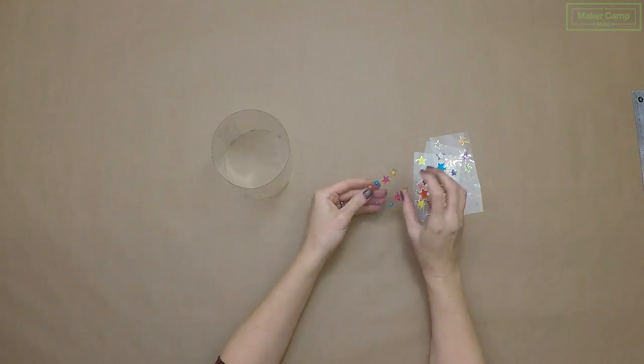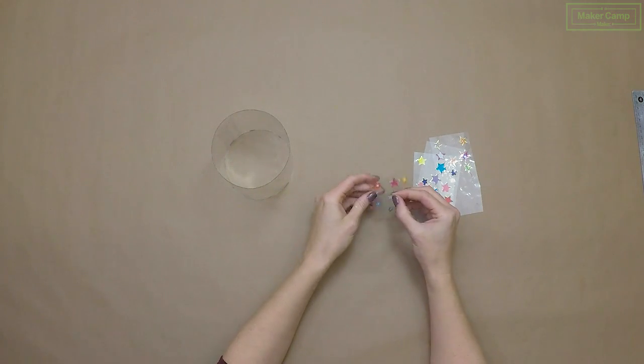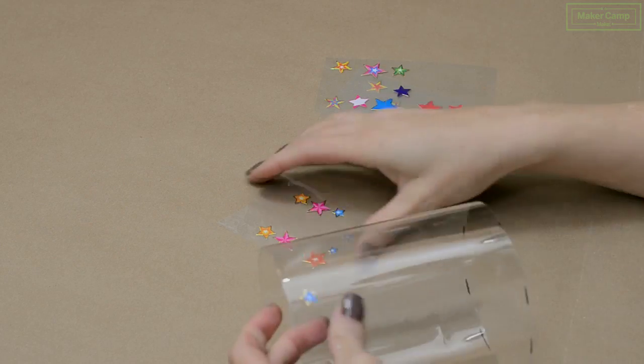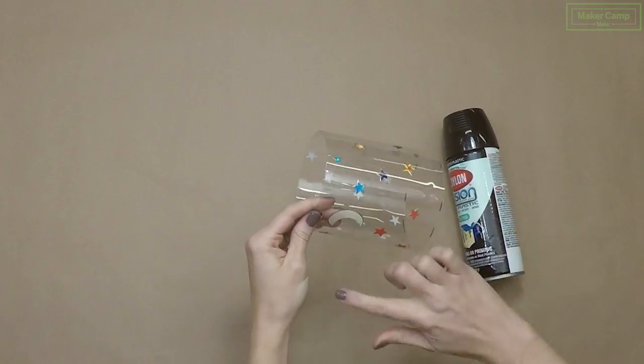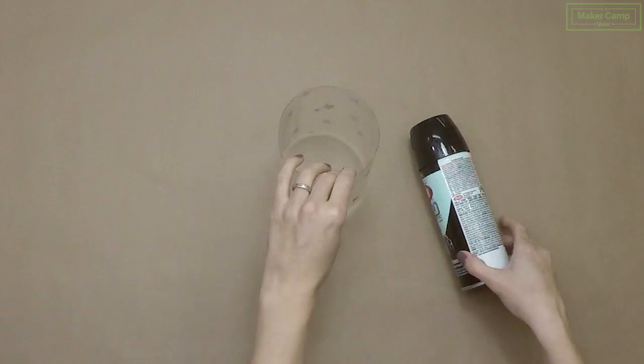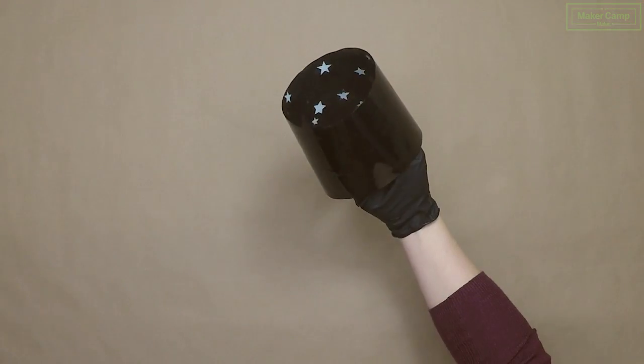Now we're going to decorate our cylinder with star stickers. These will essentially act like a stencil. Next, we're going to paint the entire cylinder with our black spray paint. Let it dry completely.